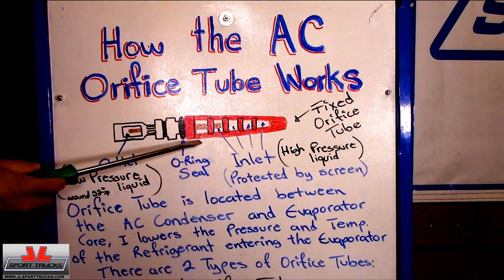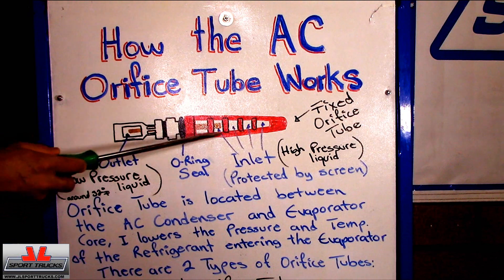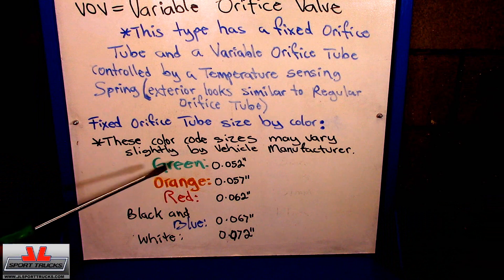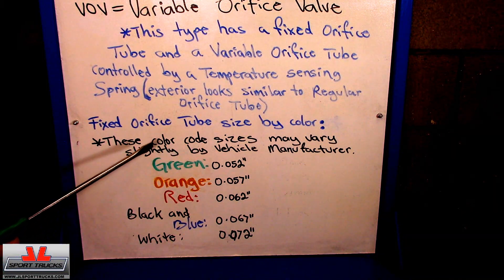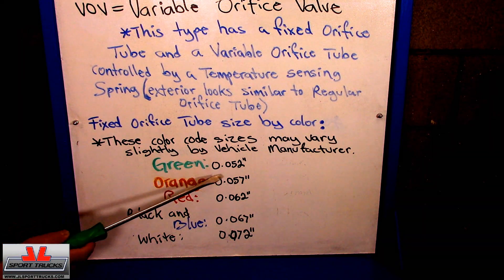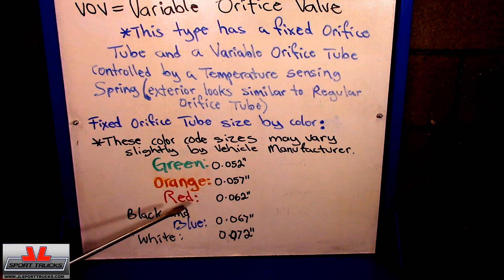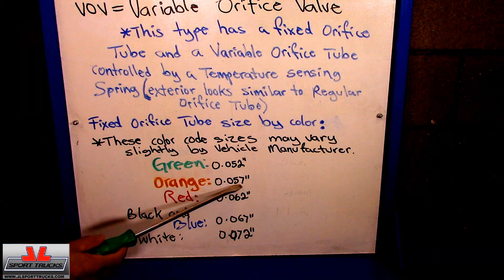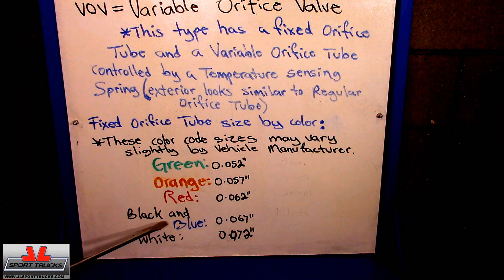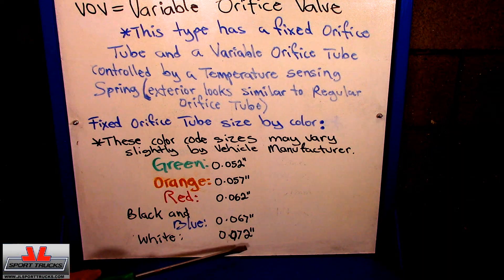Now we are going to go over the color of the orifice tube and how that determines its size. We have some of the most common orifice tube sizes by color — this can vary by manufacturer, but the colors tend to be pretty universal for the most part. A green orifice tube is going to have an opening of 0.050 of an inch. An orange orifice tube is going to have 0.057 of an inch. A red orifice tube is going to be 0.062 of an inch. Black and blue is going to be 0.067 of an inch. And white is going to have a 0.072 of an inch opening.